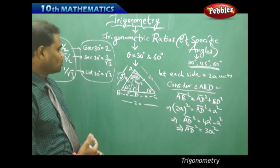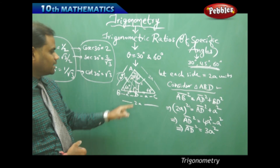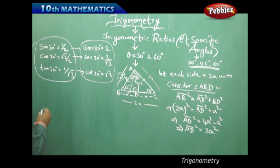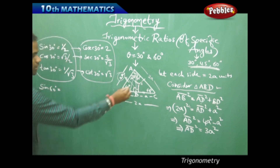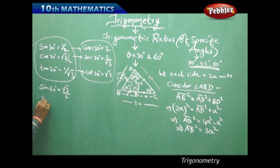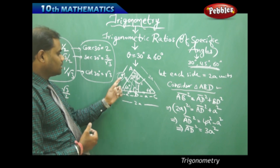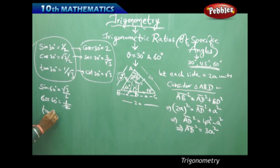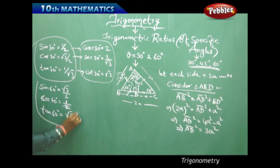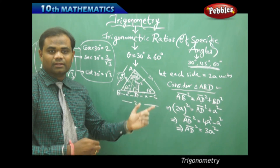For theta = 60°, using the same triangle ABD: sin 60 = opposite/hypotenuse = AD/AB = A√3/2A = √3/2, and cos 60 = adjacent/hypotenuse = BD/AB = A/2A = 1/2. Then tan 60 = sin 60/cos 60 = (√3/2)/(1/2) = √3.